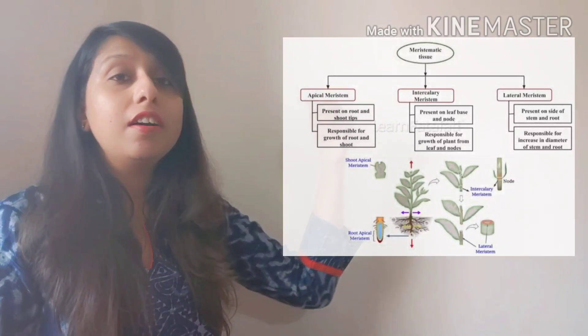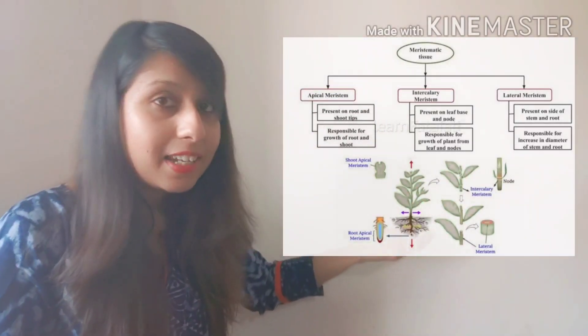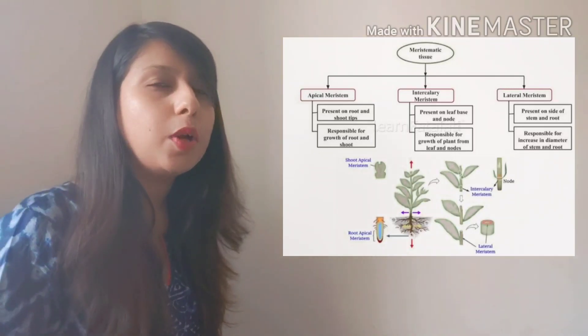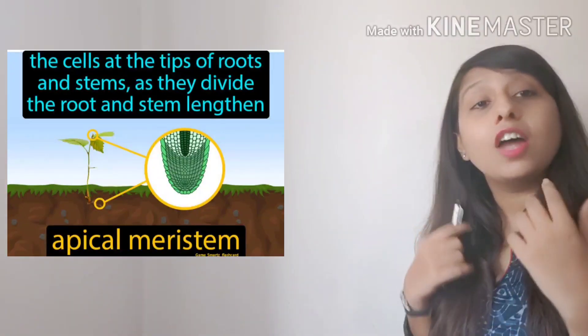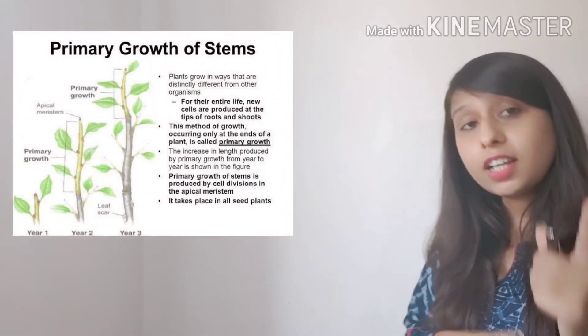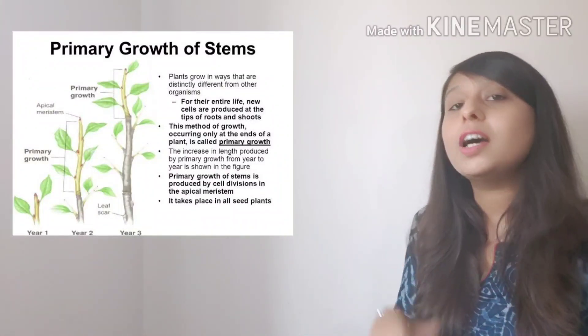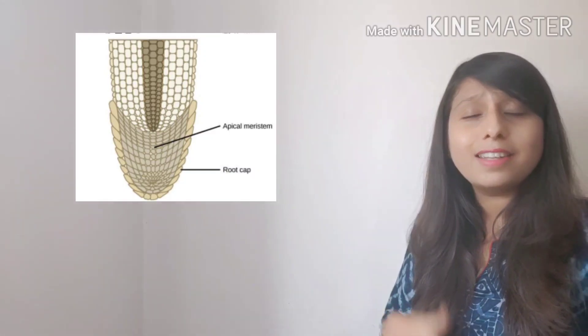There are three main types of meristematic tissues: the apical meristematic tissue, the intercalary meristematic tissue, and the lateral meristematic tissue. The apical meristematic tissue is mainly found in the tips of roots and shoots. They are responsible for unilateral growth — that is, only vertical growth. The vertical growth of the plant is also known as primary growth. So apical meristematic tissue is mainly responsible for the primary growth, and it is present in the tips of stems and roots.